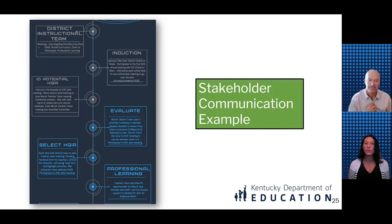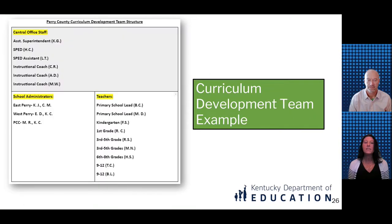It is critically important for districts to provide clear, transparent communication. This includes prior to starting the work, ensuring that stakeholders understand the process and the content areas undergoing development or revision that year. Leaders should also communicate with stakeholders throughout the process, including opportunities for them to provide input. This is an example of a flyer that Graves County created and shared with their stakeholders to communicate the timeline and work that would occur around selecting the HQIR in Phase 3. The second artifact is an example of the curriculum development team structure from Perry County, reflecting representation from both district and school leaders as well as teachers from various grade bands.